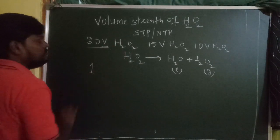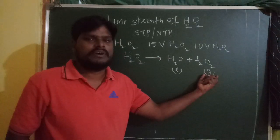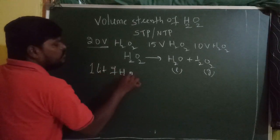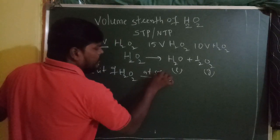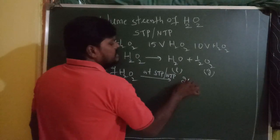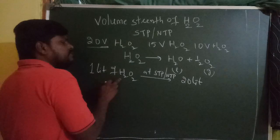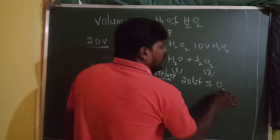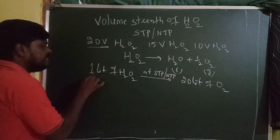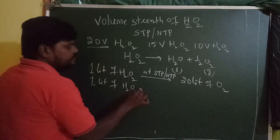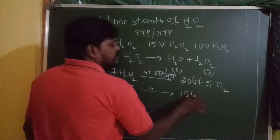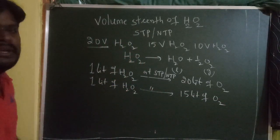The meaning is: one liter of H₂O₂, when it decomposes at STP or NTP, releases 20 liters of oxygen gas. This is the meaning of 20V H₂O₂. Similarly, 15V of H₂O₂ means that at STP or NTP, one liter of H₂O₂ releases 15 liters of oxygen.